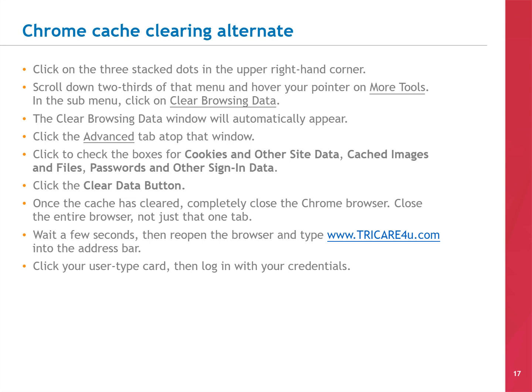There's a second way you can access this menu through Google Chrome. Click on the three stacked dots in the upper right-hand corner of your browser. Scroll about two-thirds of the way down in that menu and hover your pointer on More Tools. In the submenu, click on CLEAR BROWSING DATA. The CLEAR BROWSING DATA window will automatically appear. Check the boxes for Cookies and Other Site Data, Cached Images and Files, and Passwords and Other Sign-In Data. Click the CLEAR DATA button. Once the cache is cleared, completely close the Chrome browser — not just that one tab. Wait a few seconds, then reopen the browser and type www.tricare4u.com into the address bar. Click your USER TYPE card, then log in with your credentials.